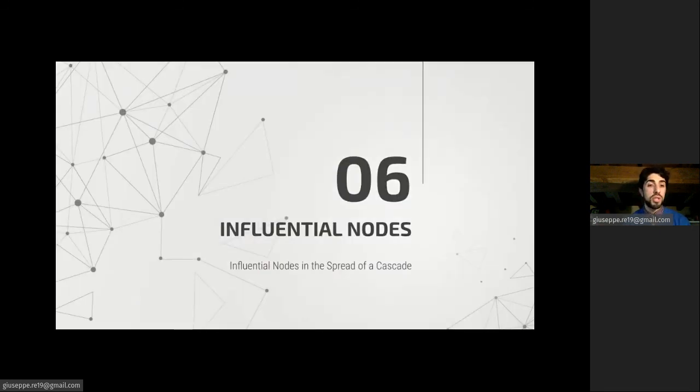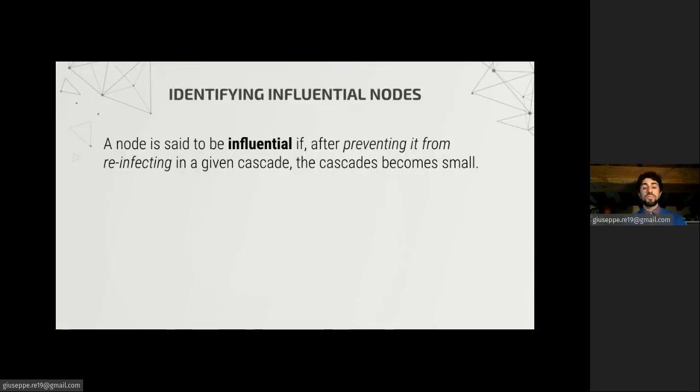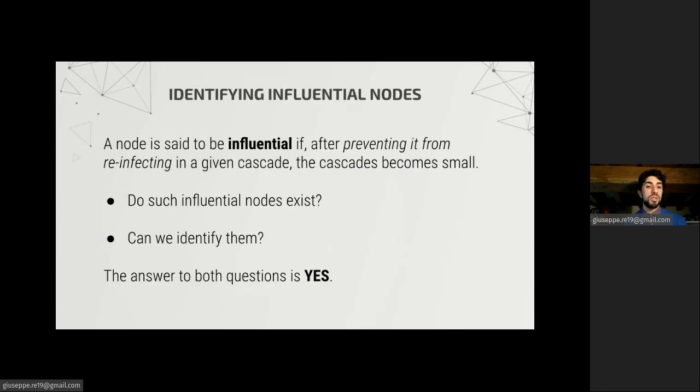Finally, we studied influential nodes in the spread of a cascade, where by influential we mean that a node, after preventing its reinfection, makes the cascade small. So we say that a node is influential if we can inhibit its reinfection, this has a huge impact on the cascade. And this is a reasonable definition because we have seen the reinfections play a crucial role in our model. There are two questions to this regard. First, do such nodes exist? And then, can we identify them? And the answer to both questions is likely yes.